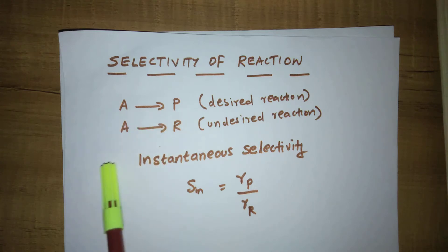Consider a multiple reaction: A gives P, A gives R. A is the reactant, P is the desired product, R is the unwanted product.